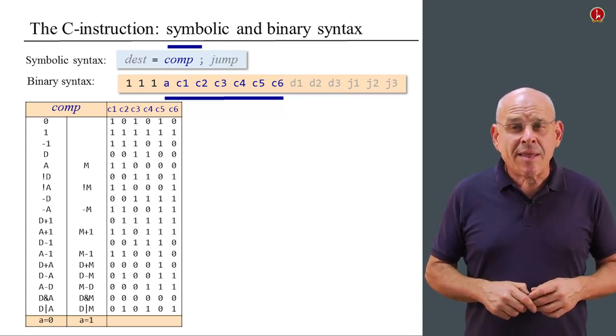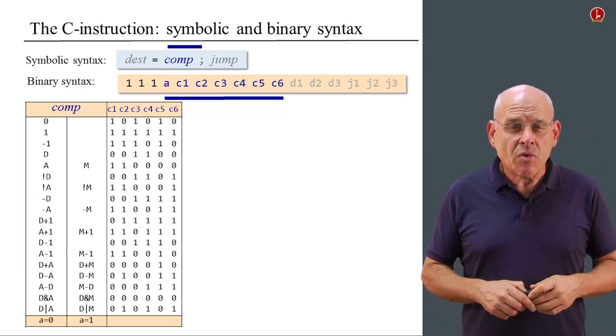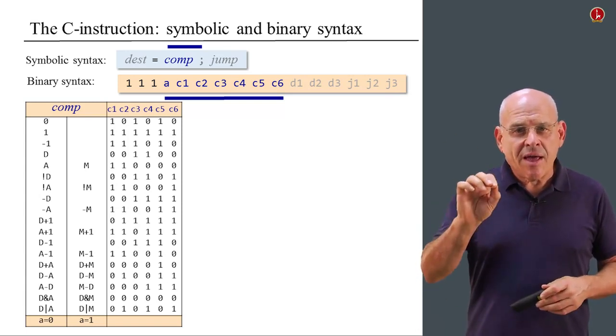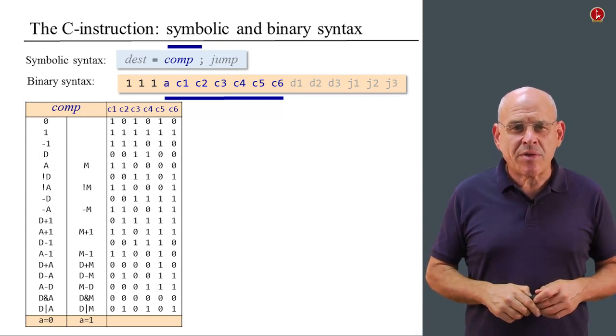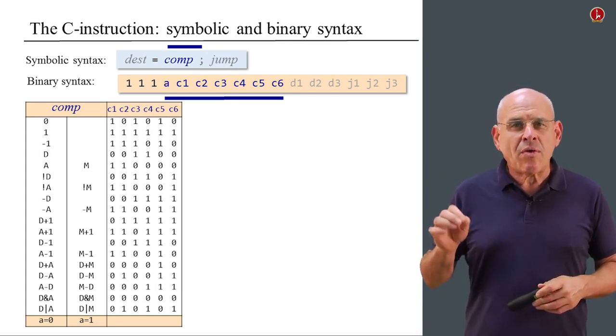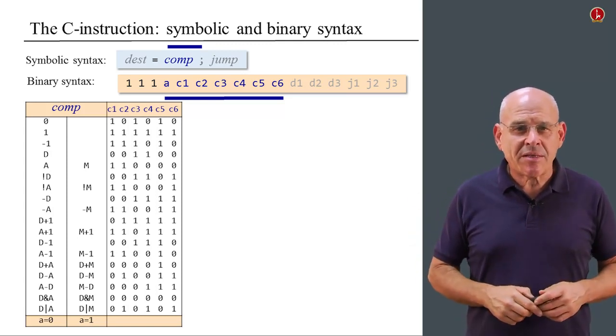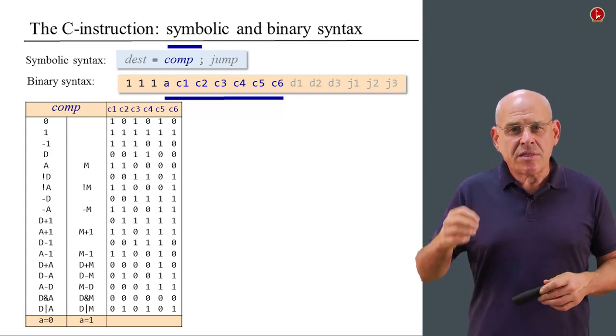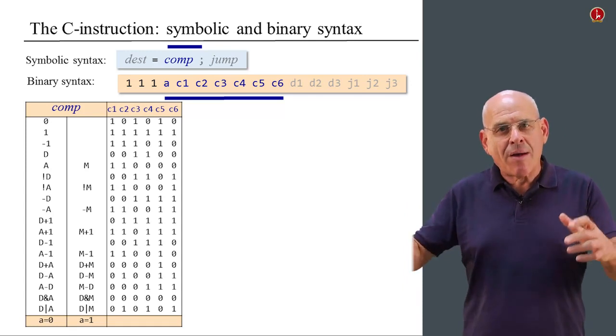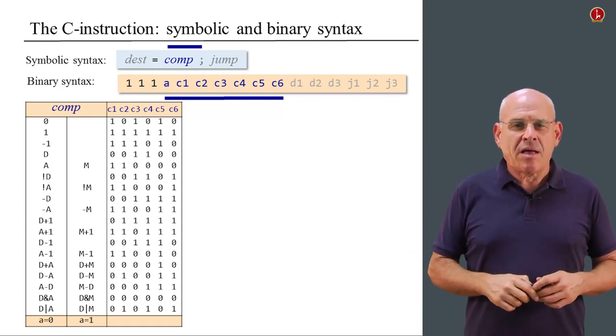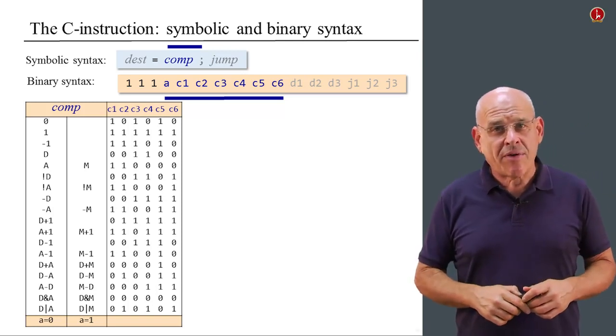We see the D plus one somewhere in the middle of the table, and we see that the D plus one is listed in the column where a equals zero. So we know that the a bit should be zero. Then we look up the rest of the row in this table and we see that the c bits should be zero, one, one, one, one, one. So that's it, that's how we represent the operation D plus one in binary. It's zero, zero, zero, or whatever it is. I don't want to make a mistake. You just look up the table and you have it. So that's how you map from symbols to binary codes.